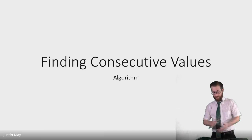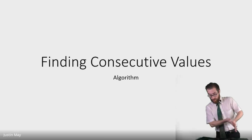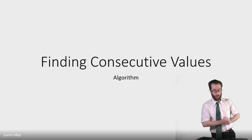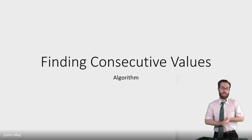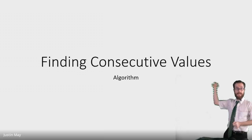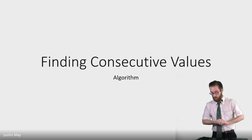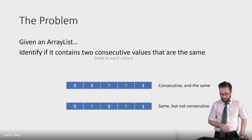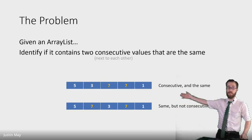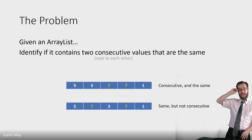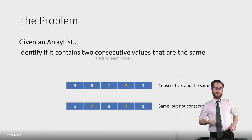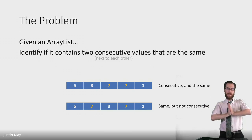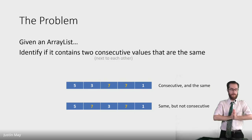Computer science! We're going to talk about some algorithms we can write using regular for loops. This algorithm is finding consecutive values. So if you have a list of things — in this case it's just a list of numbers — I want to identify if this list contains two consecutive values that are the same for this particular problem.